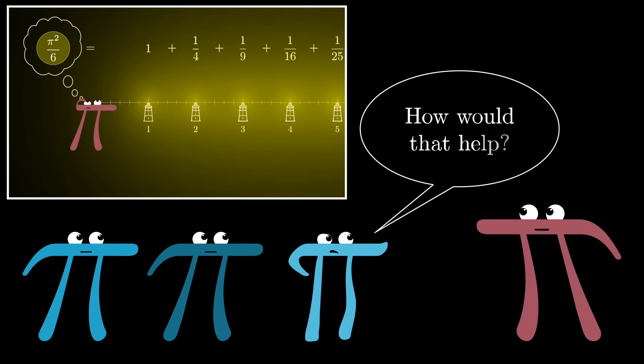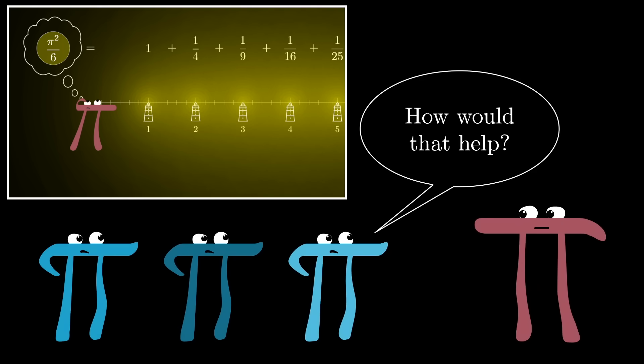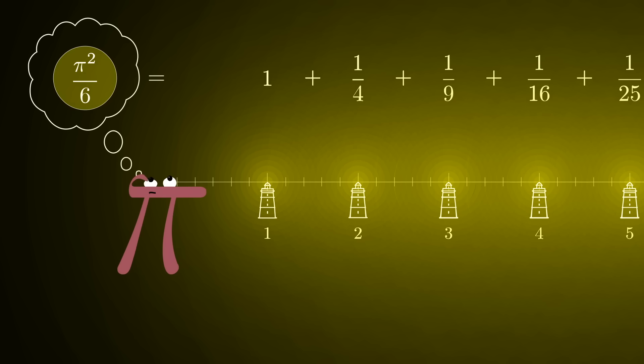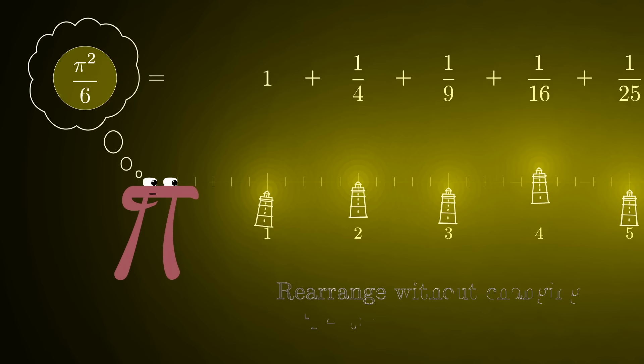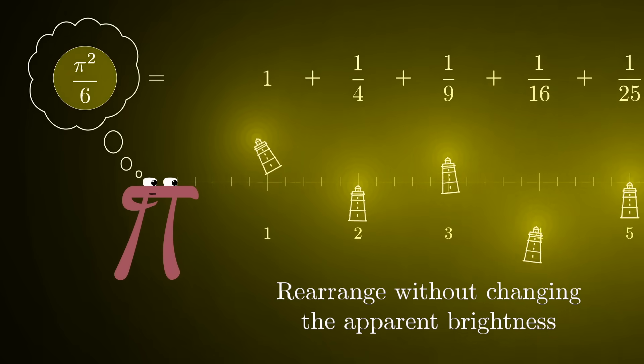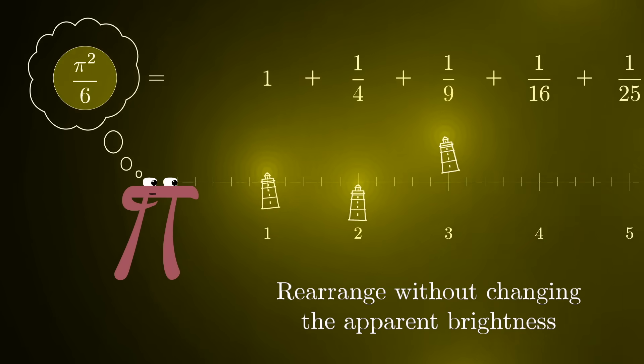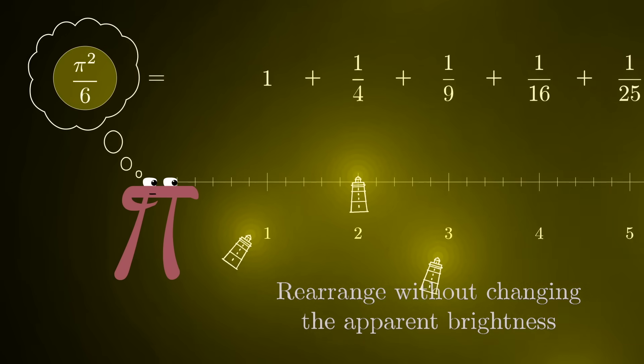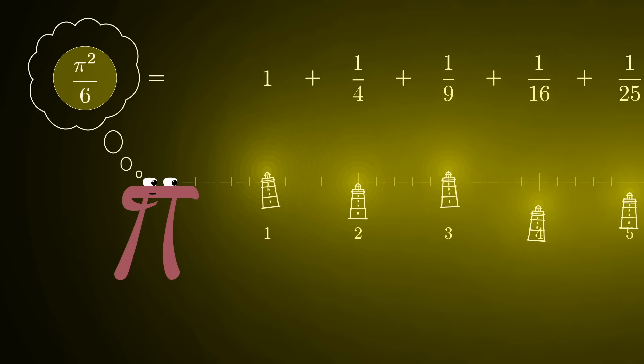And at first that might seem useless. I mean, we're just re-asking the same original question. But the progress comes from a new question that this framing raises: Are there ways that we can rearrange these lighthouses that don't change the total brightness for the observer? And if so, can you show this to be equivalent to a setup that's somehow easier to compute?